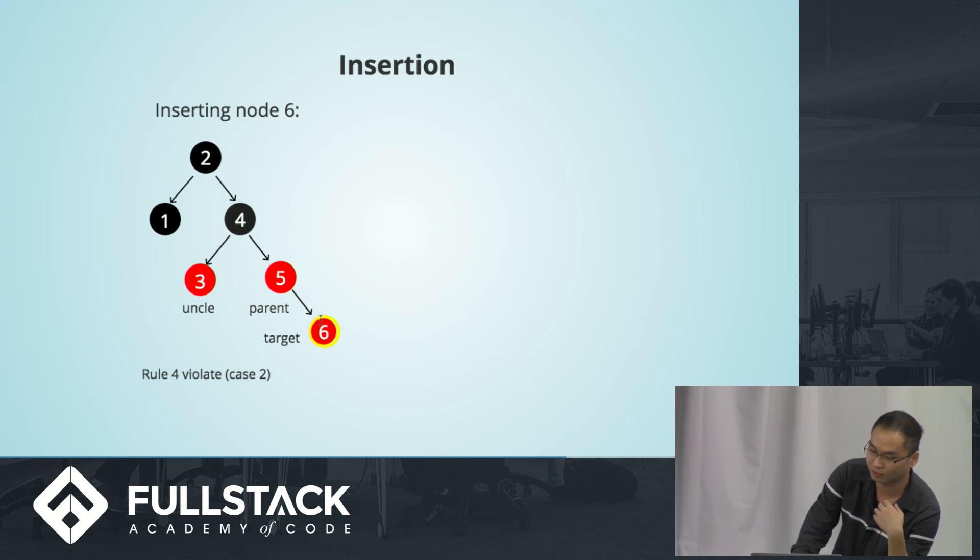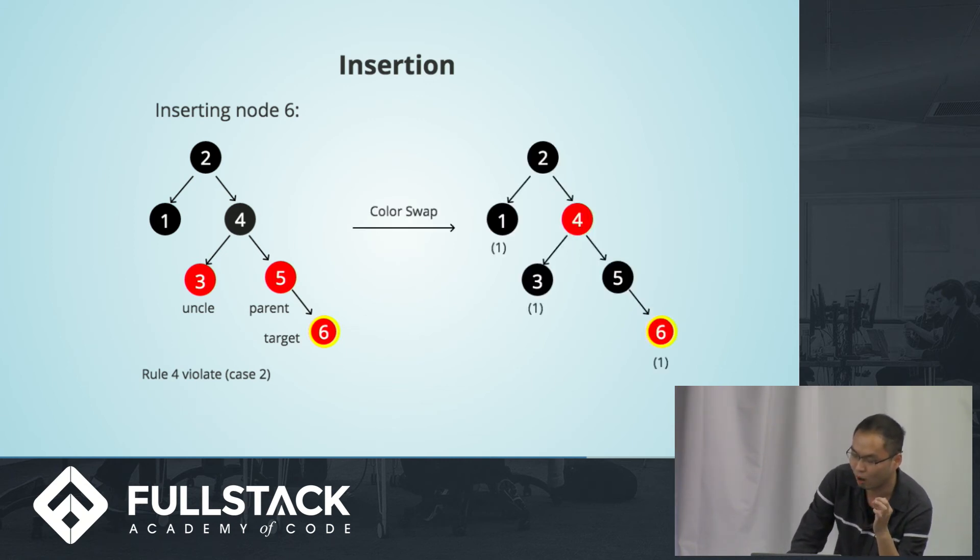Node 6. Insert node 6. This is what you have in here. And this right here, same pattern. Case 2 invalidation. Swap the colors.